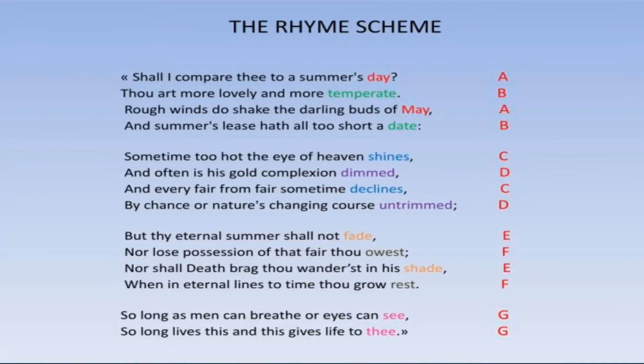So let's start reciting the poem. Shall I compare thee to a summer's day, Thou art more lovely and more temperate, Rough winds do shake the darling buds of May, And summer's lease hath all too short a date. Sometimes too hot the eye of heaven shines, And often is his gold complexion dimmed, And every fair from fair sometimes declines, By chance or nature's changing course untrimmed.